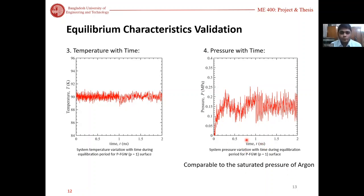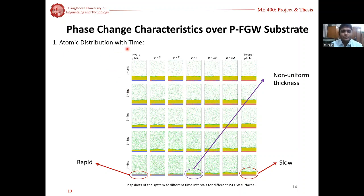From the phase change characteristics we see that the hydrophilic surface encouraged rapid evaporation and on hydrophobic surface it occurs slowly. But if we increase the value of p, it encourages the evaporation and we find that we have non-uniform thickness due to non-uniform evaporation.